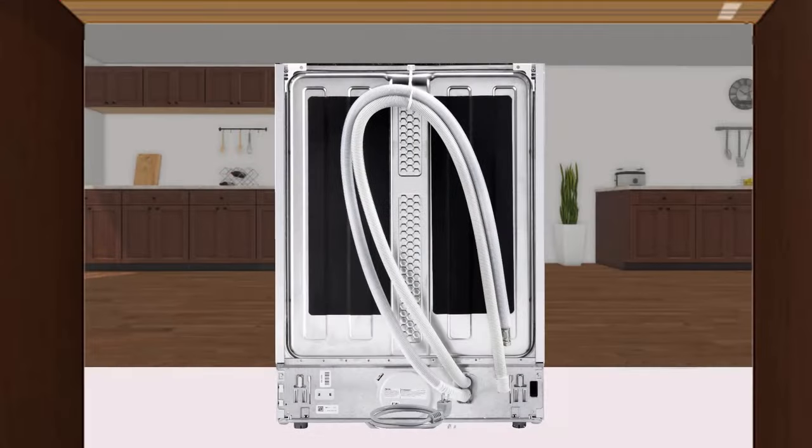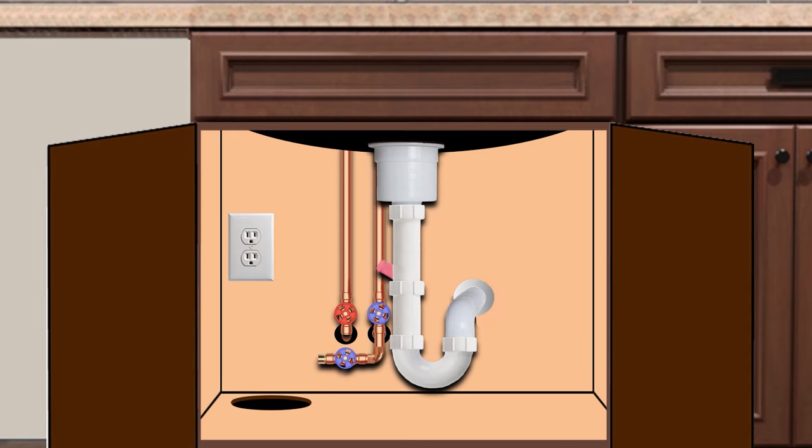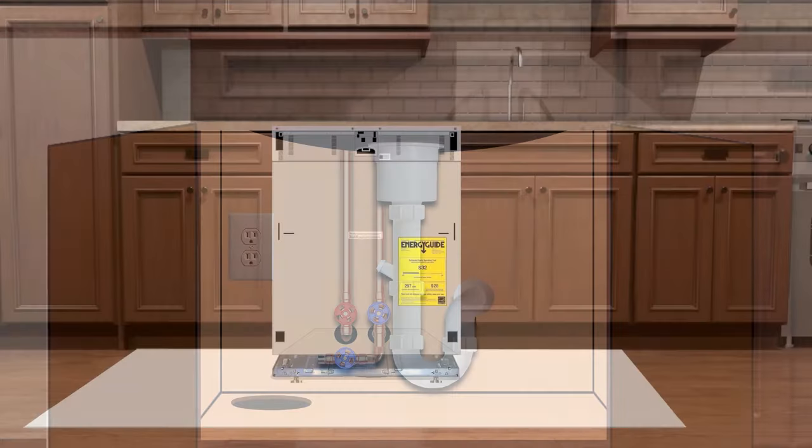Now that the steam deflector is attached, we are now ready to move the dishwasher into the niche and make the water, drain and power connections in the adjacent sink cabinet.